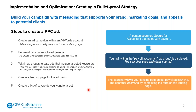Before you even set up a PPC ad, the first thing you should do is look at keyword targets — the keywords that you believe are going to be used by your ideal client. Once you're ready to set up a PPC ad, you'll want to create an ad campaign within Google Ads. We use Google Ads because it's the most popular platform with the greatest market share in search, though Bing is the next option.